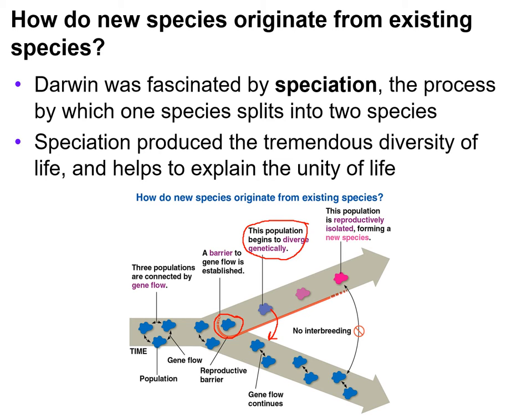So how do new species originate from existing species? Something is going to cause them to branch off. Darwin was fascinated by speciation — the process by which one species splits into two. When one species splits, we call it speciation. Speciation produces the tremendous diversity of life and helps to explain the unity of life.